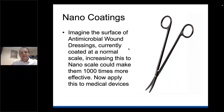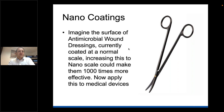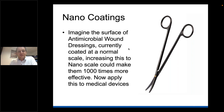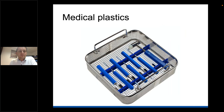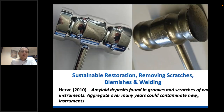Coatings are very interesting. Nano coatings can be applied - imagine an antimicrobial wound dressing coated at a normal scale with antimicrobial material; increasing this to a nano scale makes it a thousand times more effective. We're talking potentially about doing this on surgical instruments, which could be very interesting for instruments involved in procedures with a high infection rate. Again, cost is a big factor. Medical plastics are also being used in some areas of instrument design.